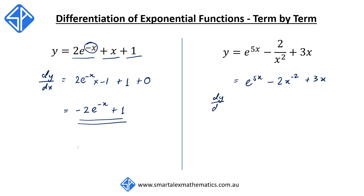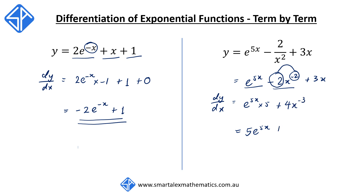Again, we differentiate term by term. Starting with e^(5x), this becomes 5e^(5x). Next, we differentiate -2x^(-2) using the power rule: -2 multiplied by -2 gives +4, and the power reduces by 1 to give 4x^(-3), which we rewrite as 4/x³ using the negative index law. Then differentiating +3x gives +3. Therefore, this is our final expression for dy/dx.